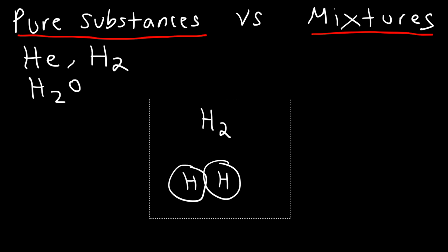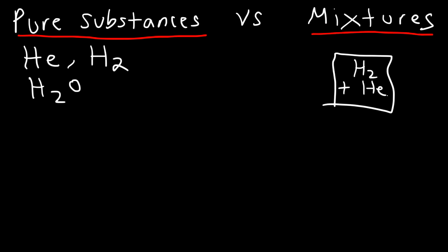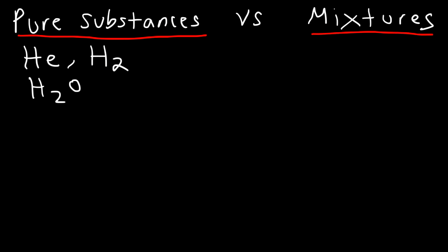An individual molecule, an individual atom, a pure element, or a single type of compound — all of these are pure substances. A mixture is simply a combination of multiple pure substances. For example, if you have hydrogen gas and helium gas together, you have a mixture. Similarly, nitrogen gas combined with oxygen gas is a mixture.